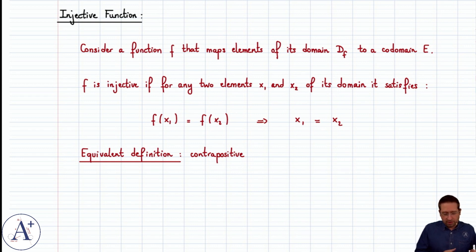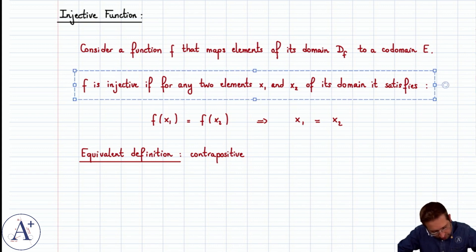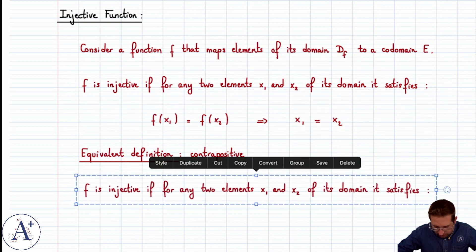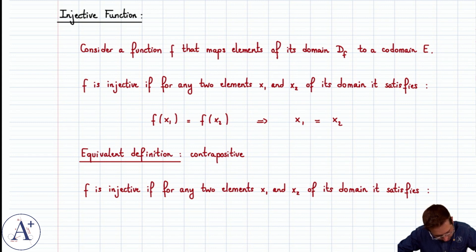Now there's an equivalent way of defining an injective function, it's called the contrapositive of this proposition, and it's to say that f is injective if for any two elements x1 and x2 of its domain, it satisfies the following proposition, which is that if you pick x1 and x2, two distinct elements of its domain, then necessarily you get f of x1 is different from f of x2.